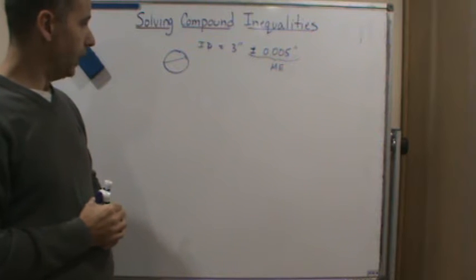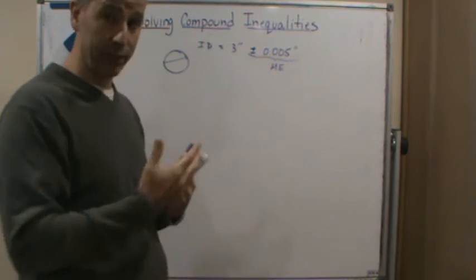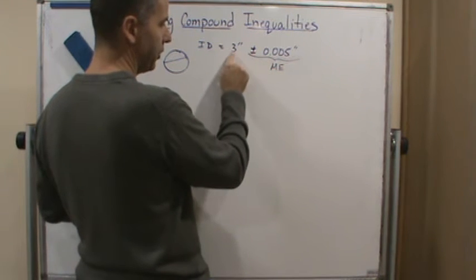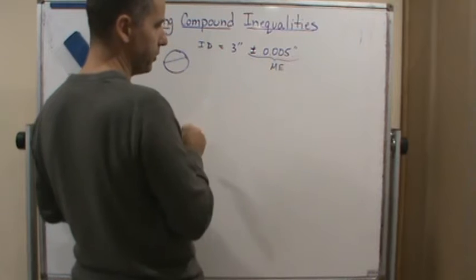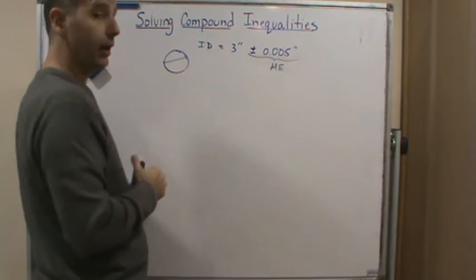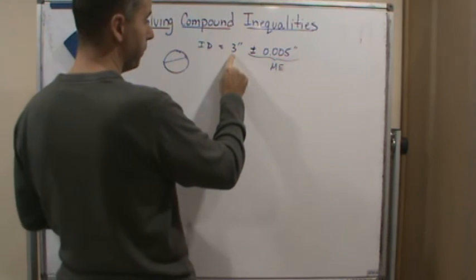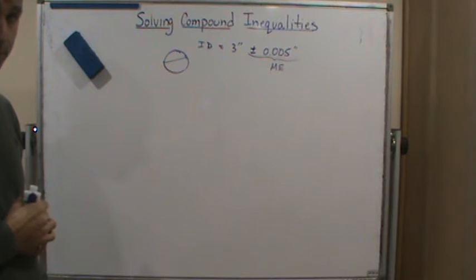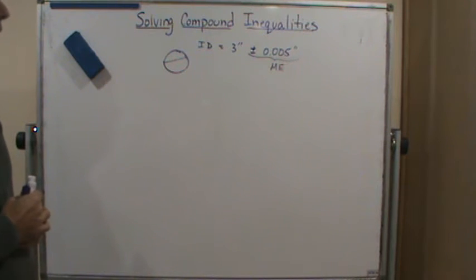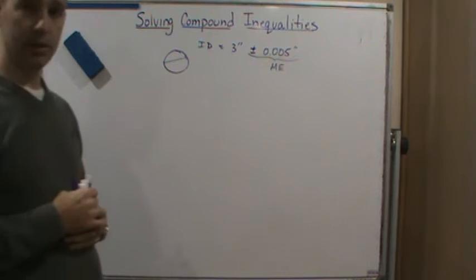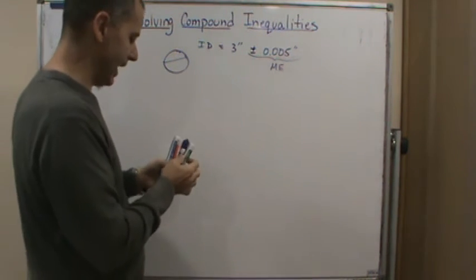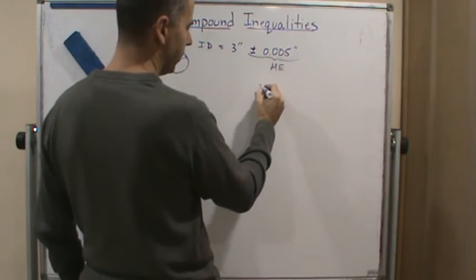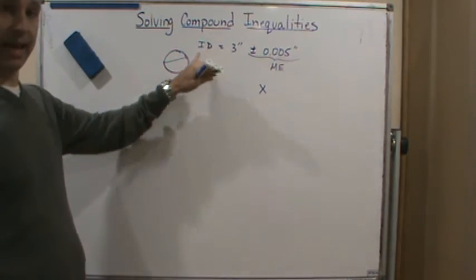So what do we mean by within tolerance? It means that our measurement is no bigger than three inches plus 0.005 or no smaller than three inches minus 0.005. So what does that mean as far as a compound inequality? Well, what that means is that our value of x, so this means that our value of x, what is x in this case? The inside diameter of the pipe.